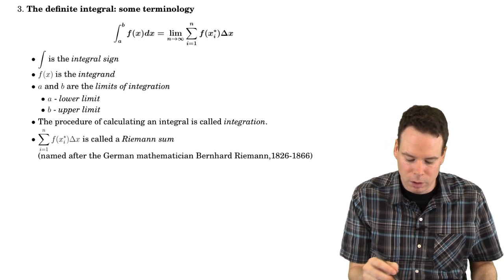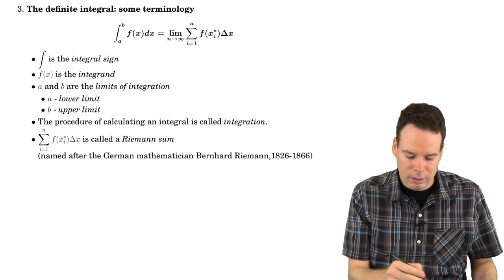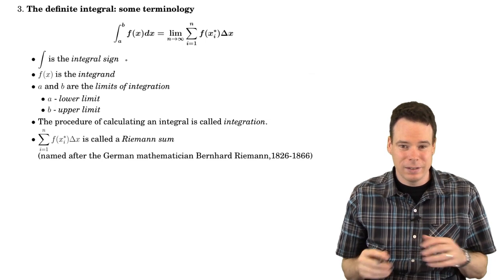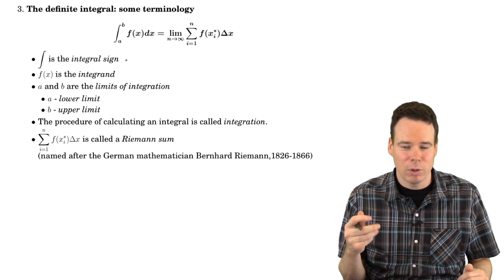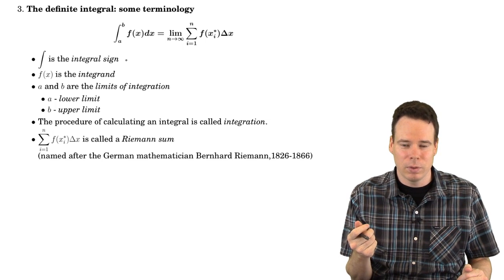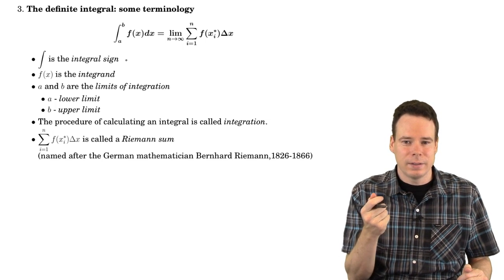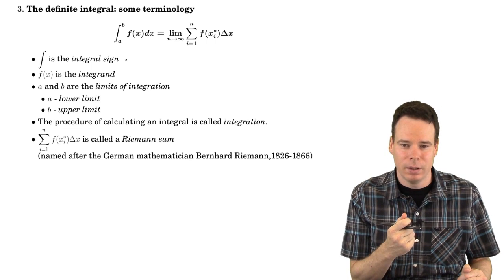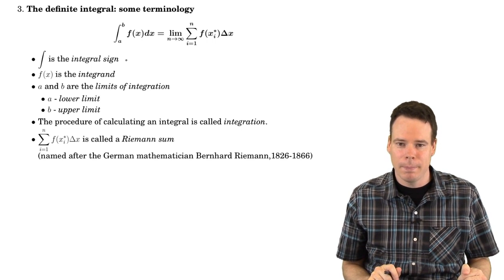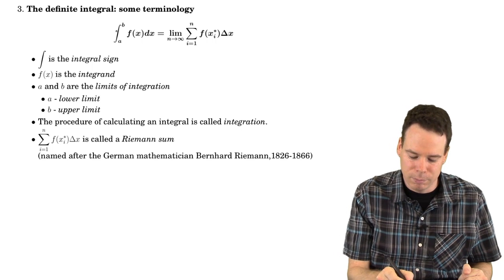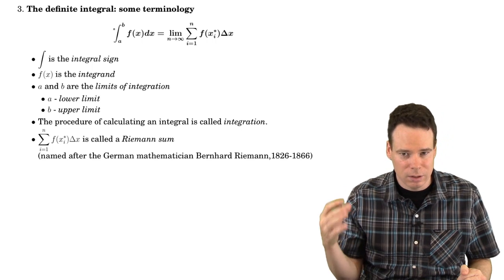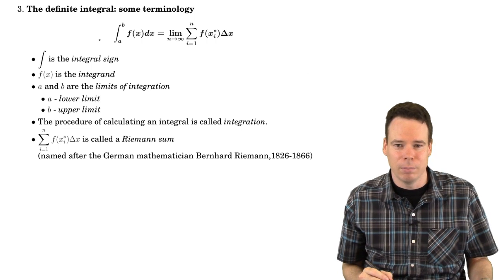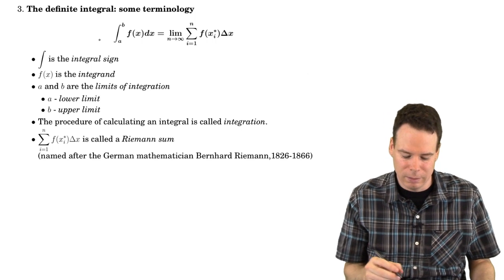A little terminology associated with the notation: this elongated S is known as the integral sign. Why elongated S? Because the integral comes about as a limiting process of a Riemann sum, and S is the first letter of the word 'sum.' The symbol is an elongated S, just to reinforce the idea that there is a sum lurking in the background.